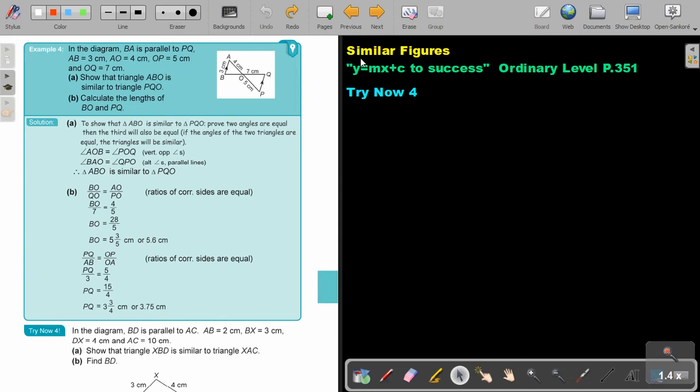In this video, we are going to continue with similar figures. You will find this on page 351 in the Namibia Ordinary Level Mathematics textbook Y equals Mx plus C to success.